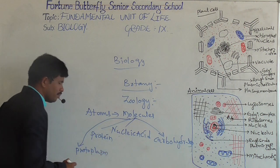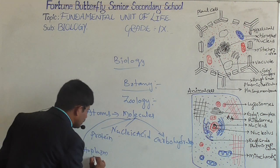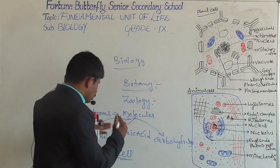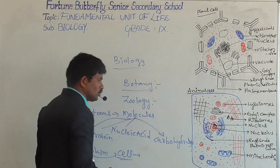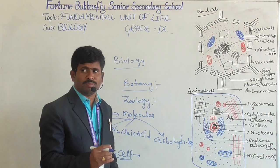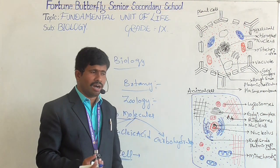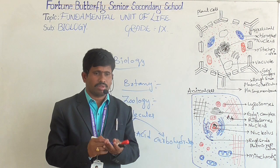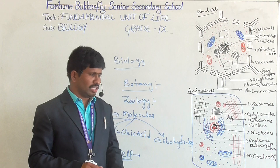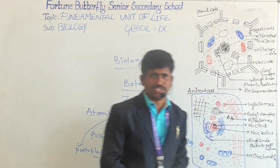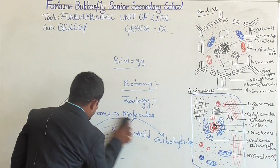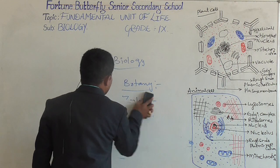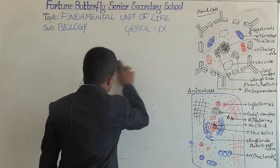From the protoplasm, groups of protoplasm together form the cell. Groups of cells together form tissues, groups of tissues together form organs, and groups of organs organized together form an organism. All living organisms have a complex body structure made up of tiny particles called cells.